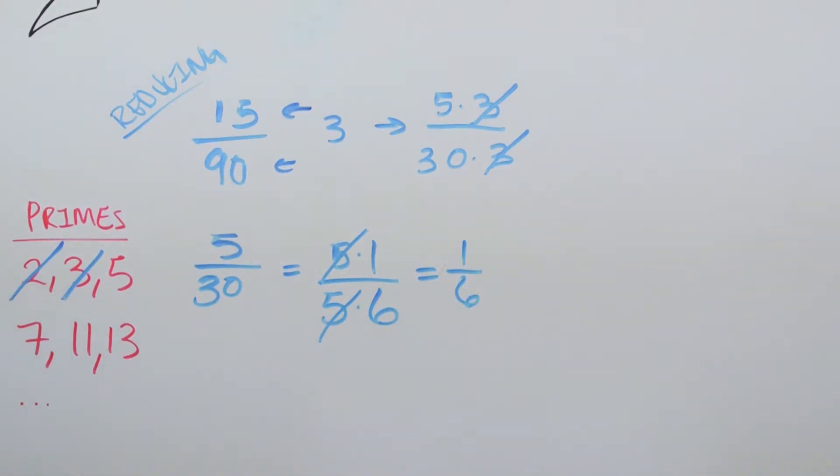Now, this fraction is in lowest terms, and that's the end of the line. Congratulations, 15/90 has been completely reduced.